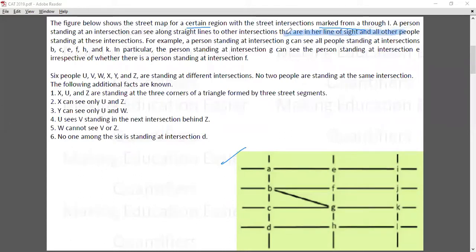They are in the line of sight and all other people standing at those intersections. For example, a person standing at G can see all the people standing at B, C, E, H, F, K. G can see B, C, F, E, H, and K - everyone who is in the way.